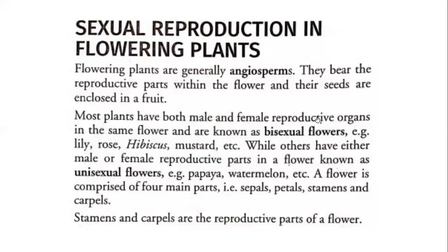Most plants have both male and female reproductive organs in the same flower and are known as bisexual flowers — like lily, rose, hibiscus, mustard, etc. Hibiscus is very famous. While others have separate male and female reproductive parts in a flower, known as unisexual flowers — like papaya, watermelon, and bottle gourd. They are unisexual flowers.